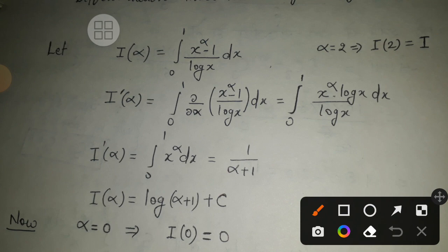and x is constant in the integration, so its derivative is x^α·log(x)/log(x) dx. We cancel log(x) with log(x), so I'(α) equals the integral from 0 to 1 of x^α dx.